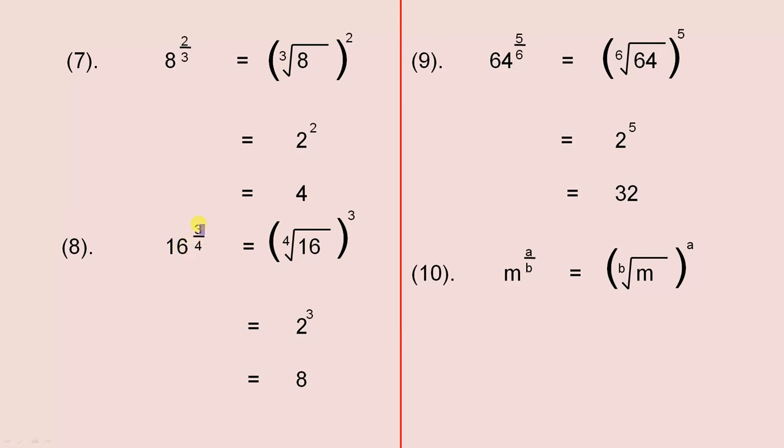16 to the 3 quarters. The fourth root of 16, because 4 is the denominator. Whatever that answer is, you cube it, because 3 is the numerator. So the fourth root of 16 is 2, 2 cubed is 8. Now we know that the fourth root of 16 is 2, because 2 by 2 by 2 by 2 gives you 16.